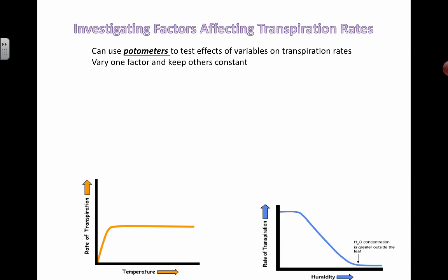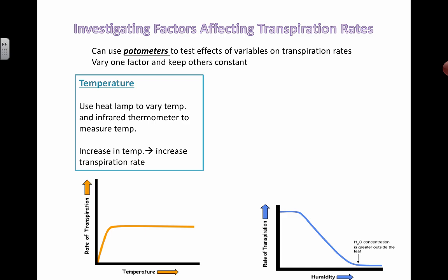and then every other variable would be kept constant. So for example, if you're investigating temperature, then you would make sure that light, humidity, wind, and any other factors that could possibly mess with the transpiration rate, that those would all actually be kept constant.